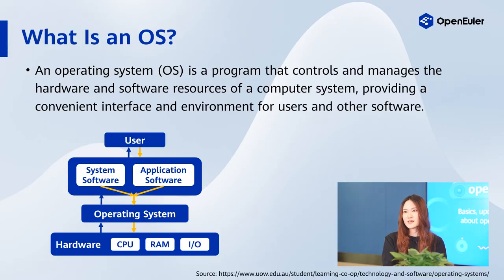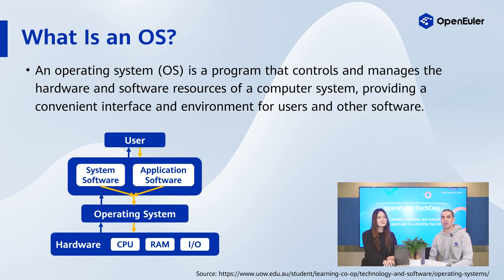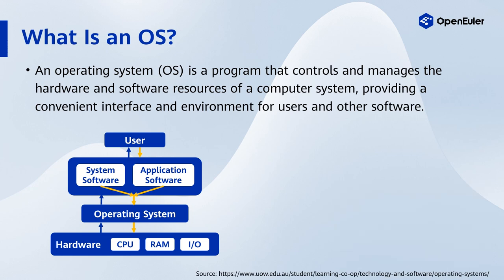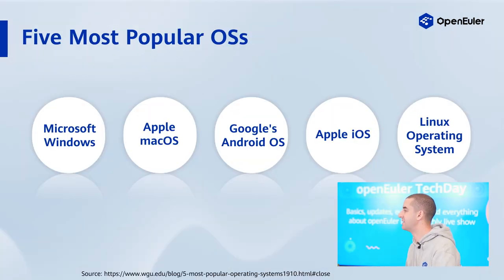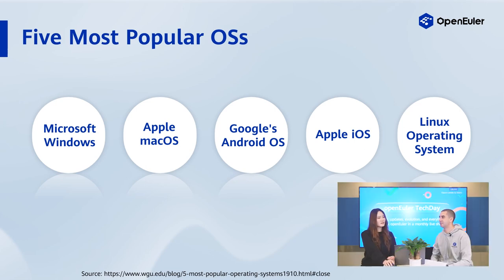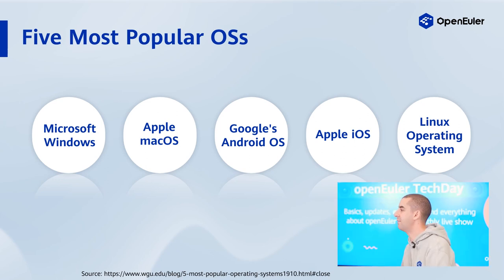Undoubtedly, an OS is the most important software that runs on a computer. An OS is a program that controls and manages the hardware and software resources of a computer system. It provides a convenient interface and environment for the user and for other software. When you hear OS, what first comes to mind? Like Windows, Android, iOS, MacOS, and Linux. Yes, these are all well-known OSs — one of these five is likely on every single one of your smart devices, whether it's a computer, phone, or tablet.